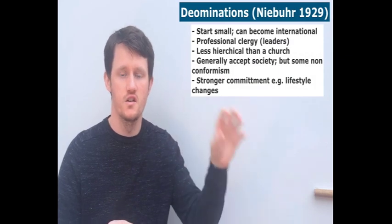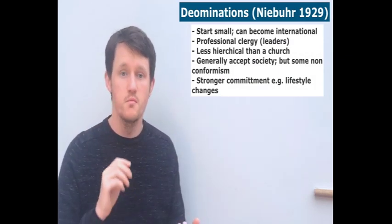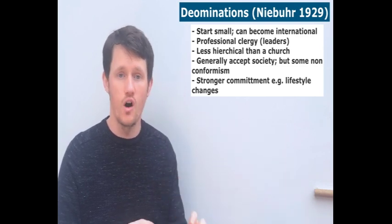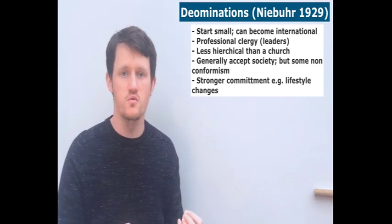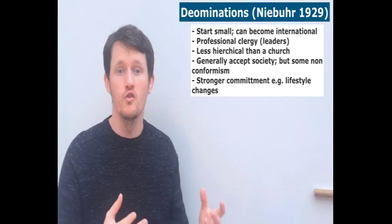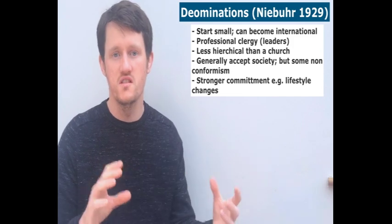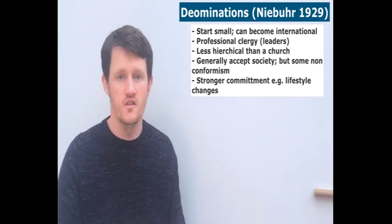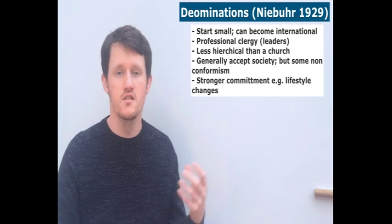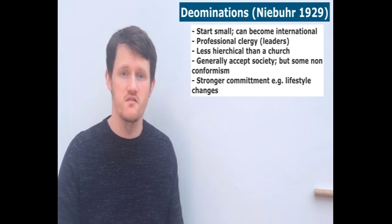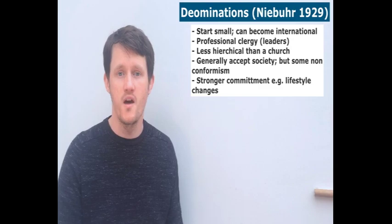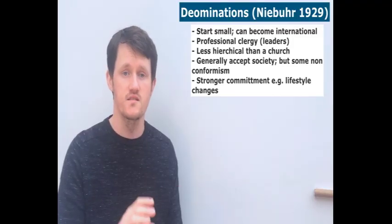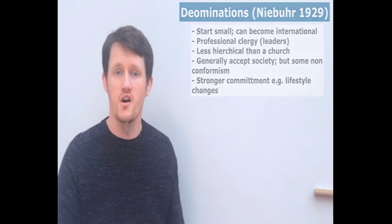The denomination lies between a church and a sect. It's more organised than a sect, although not as organised as a church. There are professional leaders, but it's less hierarchical. It's generally accepting of society, but the message will still be slightly more radical, slightly more non-conformist — not anywhere near as radical as a sect. They require slightly more commitment than churches; the denomination might ask for a lifestyle change, perhaps giving up alcohol. A good example is the Methodist church. Denominations tend to be much smaller and often actually form out of a sect that has cooled down and become more organised.